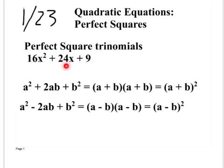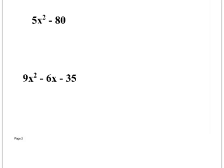Now let's factor these. First: 5x² - 80. It can be factored. What can I take out of 5x² - 80? Is 5 a common factor? Yes. So I'm left with 5 times (x² - 16). What's 80 divided by 5? 16. Thank you.